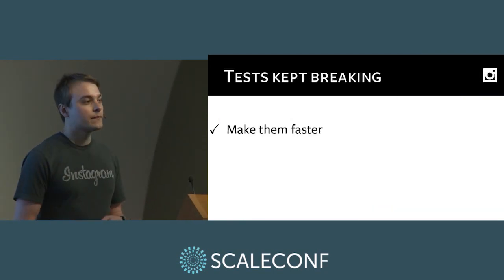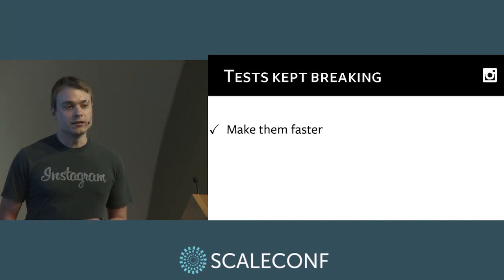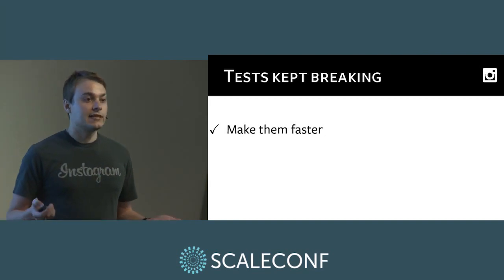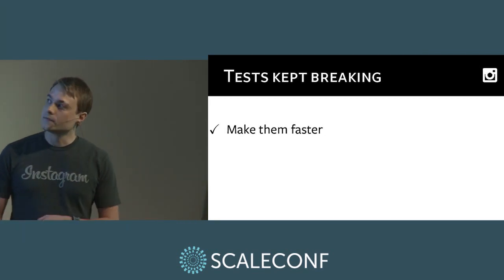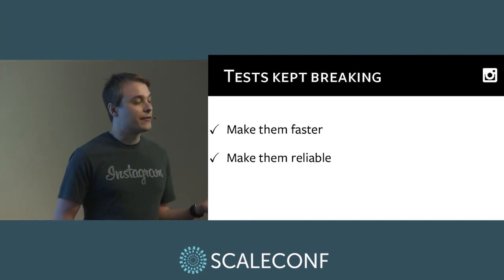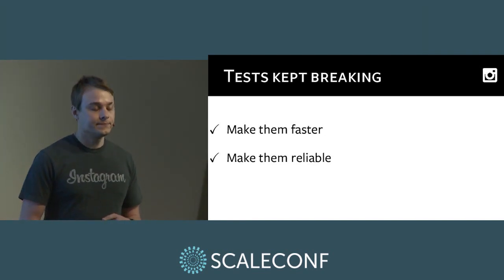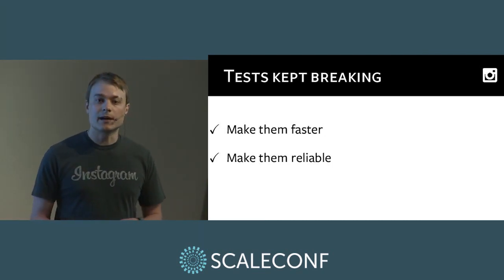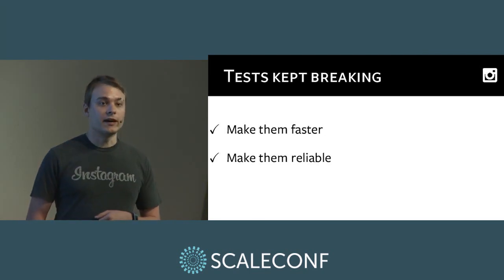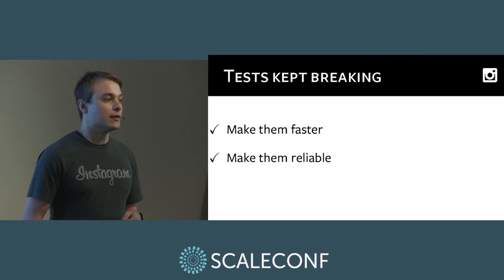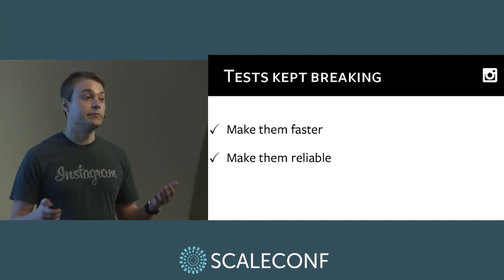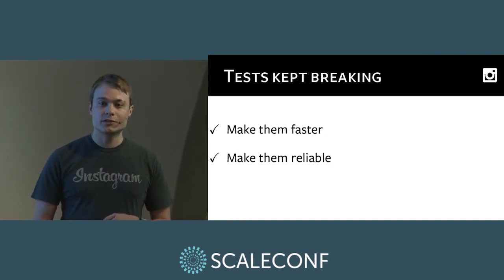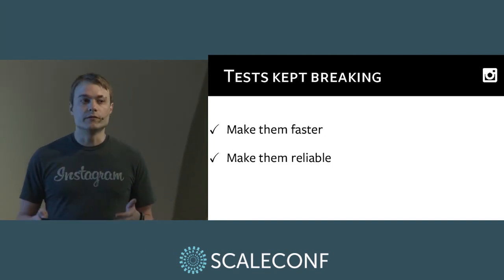So what did we do? First, we made the tests faster. They were taking 12 to 15 minutes to run, and an engineer could easily put up a diff, get it accepted, and land it before tests even finished. We got tests running in about five minutes through a couple of optimizations: putting databases in memory, increasing parallelism, and profiling and optimizing heavily-used Python code. We also had to make them more reliable — sometimes they'd fail completely, usually with database-related issues. This was a case of identifying common breakages, fixing them, and adding retries.